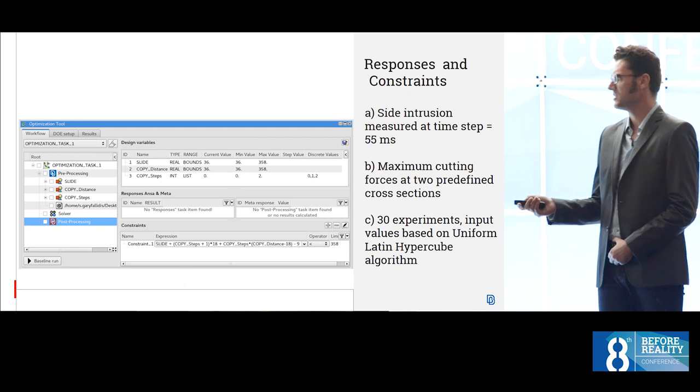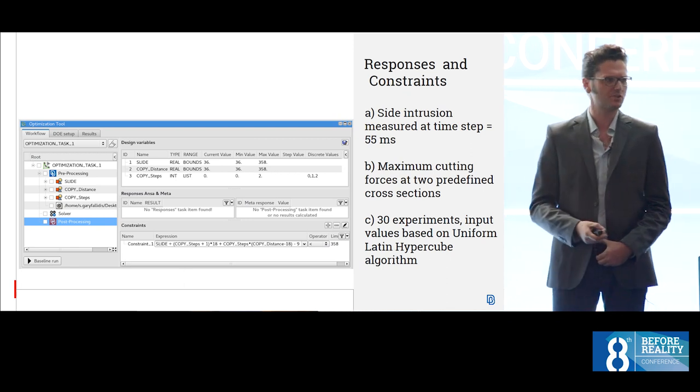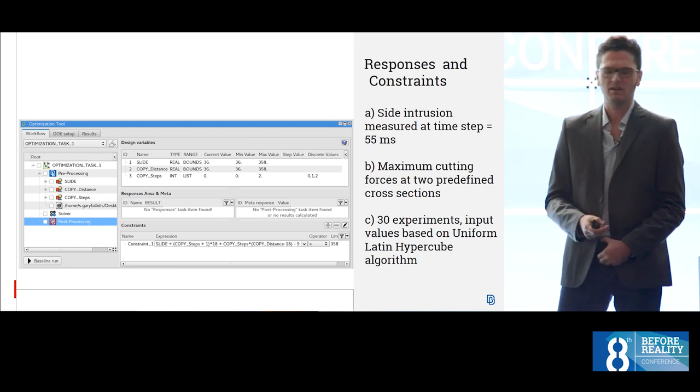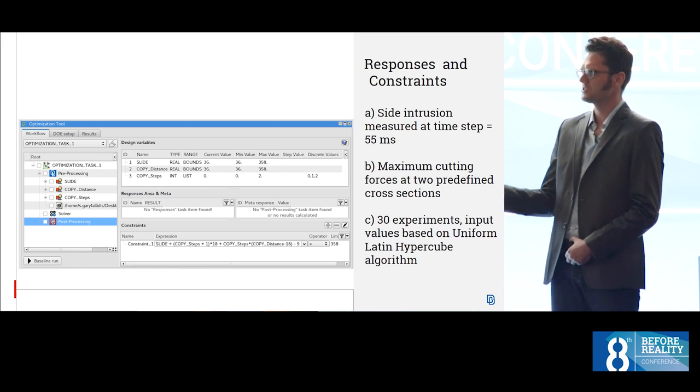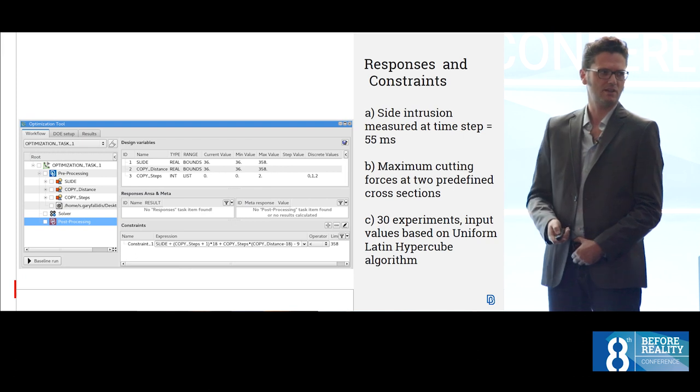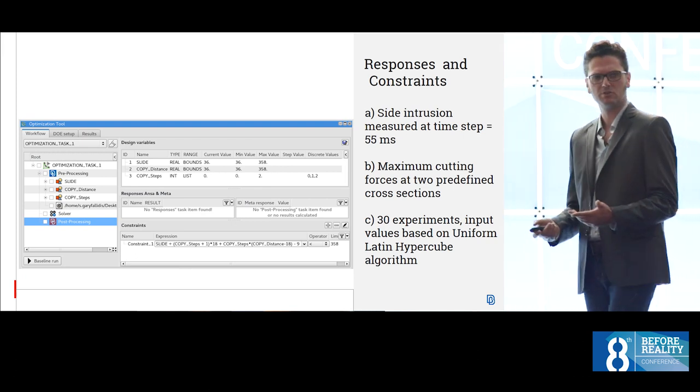30 experiments were generated using the uniform Latin hypercube algorithm. This is the optimization tool that comes with ANSA that we used for this purpose.